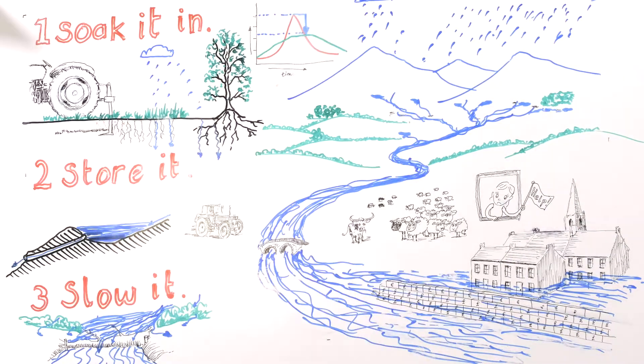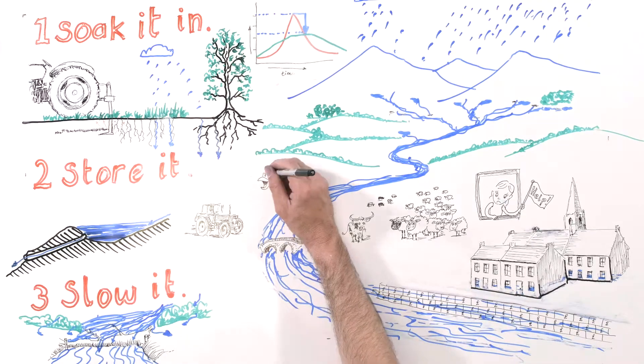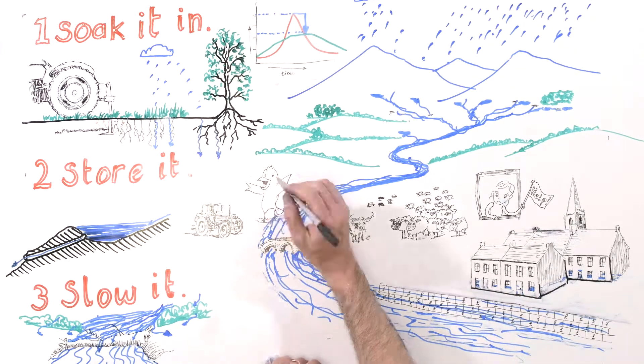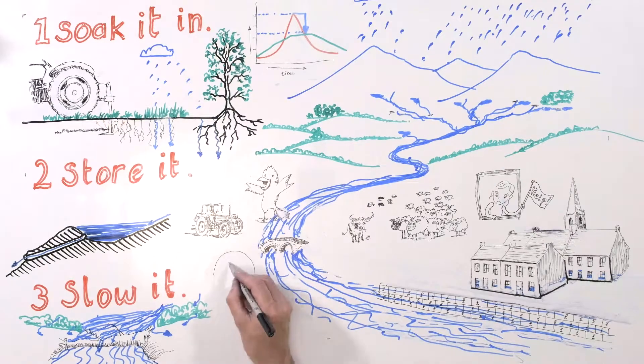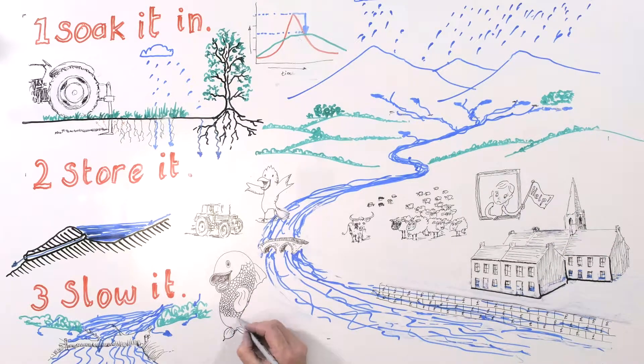These features combine to reduce the flood peak, meaning the defences in the town can be smaller and cheaper, and the landscape can function better. The woodlands provide additional benefits such as habitats for wildlife and pollinators for crops, and the ponds can help trap sediments and other nutrients.